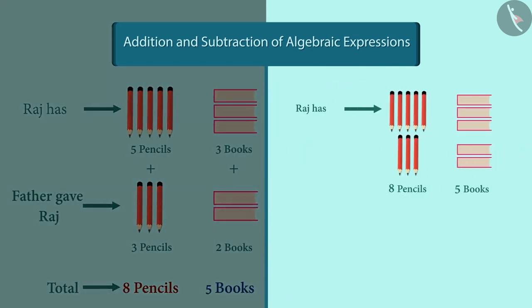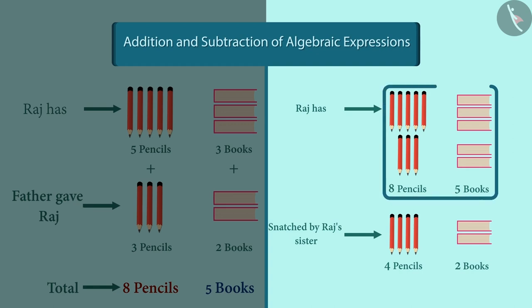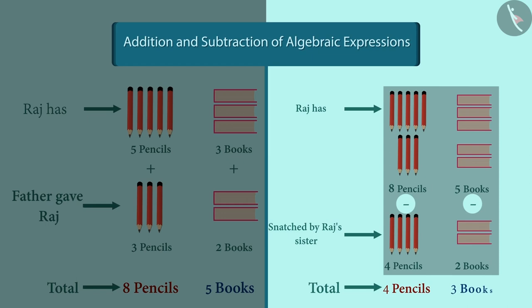Now, suppose Raj's sister comes and snatches four pencils and two books from him. Can you tell me how many pencils and books are left with Raj now? Absolutely correct. Four pencils and three books.